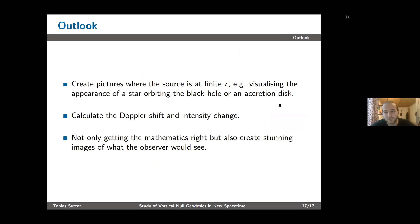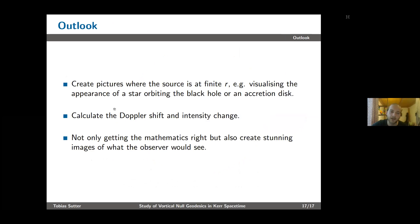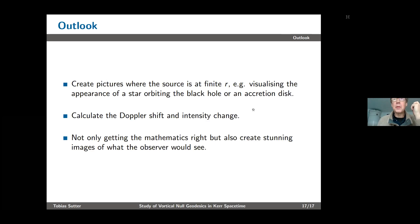With this I want to close and leave you with a short outlook. The ultimate goal would be to create a visualization of what an actual physical observer would see. For that we need to consider a physical light source like a star orbiting a black hole or an accretion disk, and for a realistic image we also need to calculate the Doppler shift and the intensity change. Thank you very much.